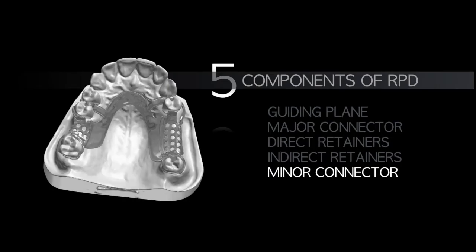The last component—the fifth—is the minor connector. The minor connector is what connects all the components together: indirect retainer, major connector, direct retainer, and guiding planes. It connects all pieces together, including the mesh supporting the edentulous spaces. The minor connector also connects the rest seats onto the major connector.